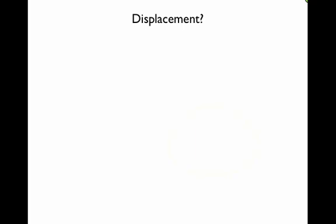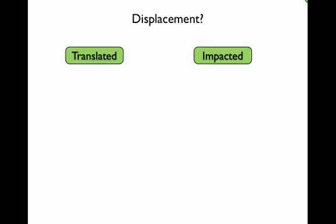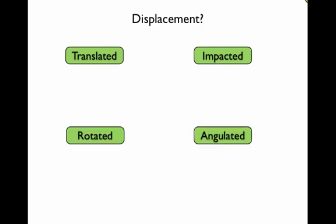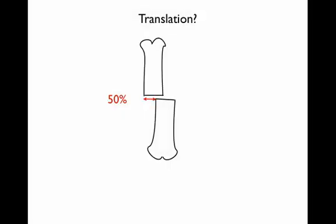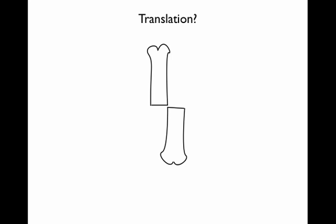Finally, we'll talk about displacement. There are various forms of displacement which can occur: translation, impaction, rotation, or angulation. When describing displacement, the important thing is to talk about the proximal fragment and the distal fragment — you're referring to the position of the distal fragment in relation to the proximal fragment. An example would be that the distal fragment has translated 50%. You don't have to use percentages; you could use terms such as significantly or moderately. In some cases it would be completely translated — 100% or more.